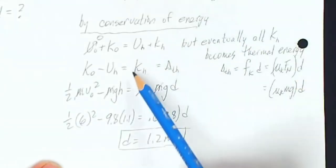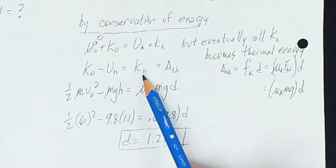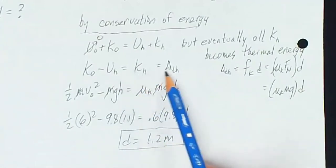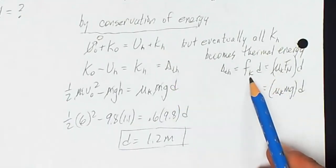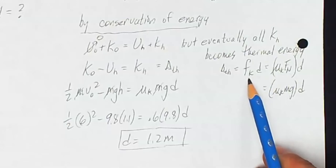So that's what I've done. And since this is equal to kH, I can also say it's equal to delta thermal. And my delta thermal, I know, is the frictional force times the displacement. Remember, kinetic friction is a constant force. So I can just say force times distance for the work done by friction.